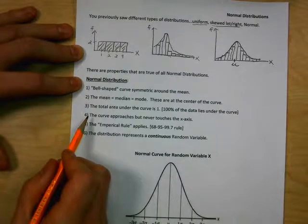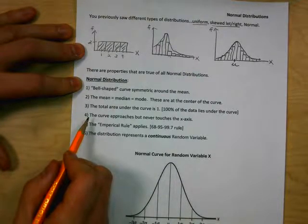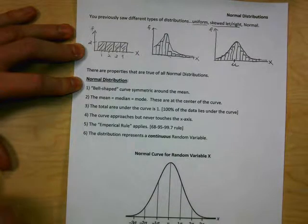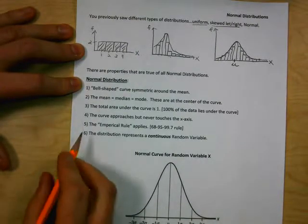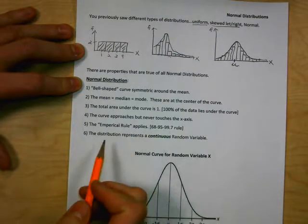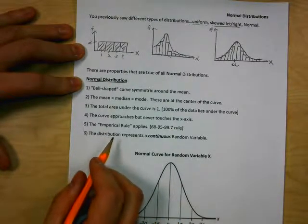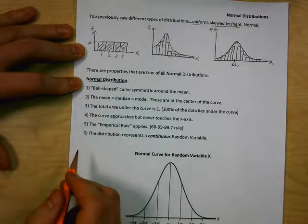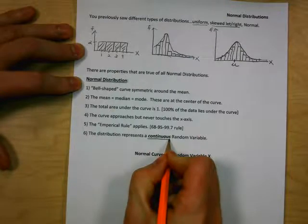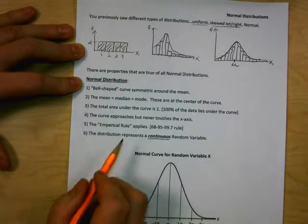The fourth property: the curve approaches but never touches the x-axis — this is called asymptotic behavior. The curve gets closer and closer to the x-axis but never touches it; in theory, the curve can go on forever in each direction. The fifth property: the empirical rule applies — that's the 68, 95, 99.7 rule, which we'll get into shortly. The sixth property: the distribution represents a continuous random variable. Unlike discrete random variables with a countable number of outcomes, continuous random variables include things like ages, weights, heights, and time.